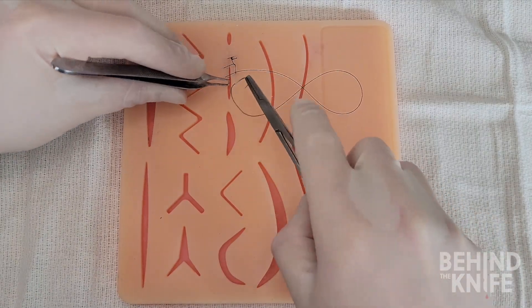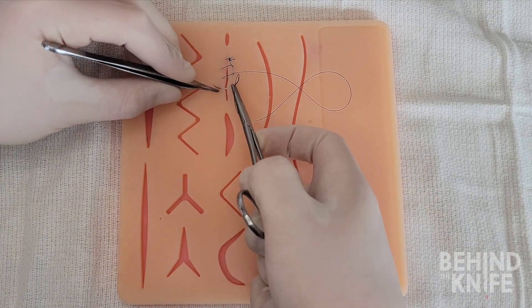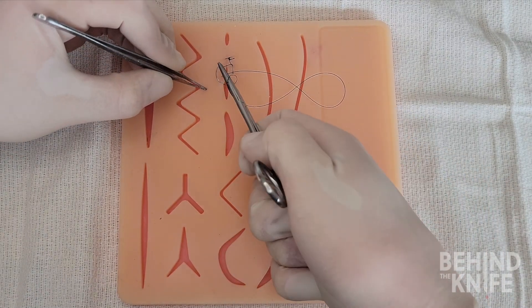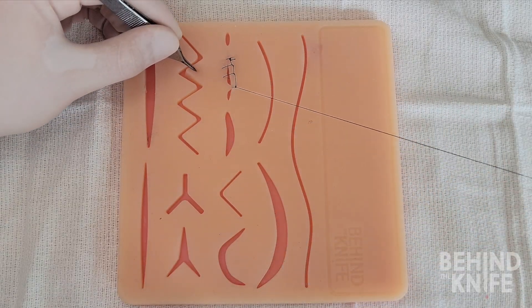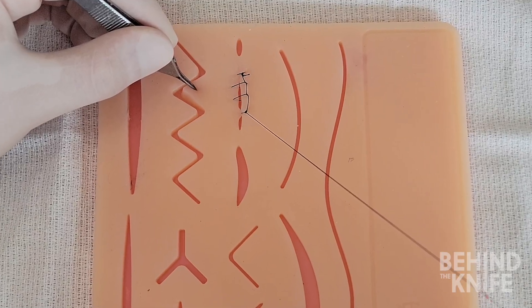You will continue this until you reach the end of the wound and then we'll finish this technique the same way as I've demonstrated in the prior non-locking simple running suture video. And that is how you perform the locking variation of the simple running suture.